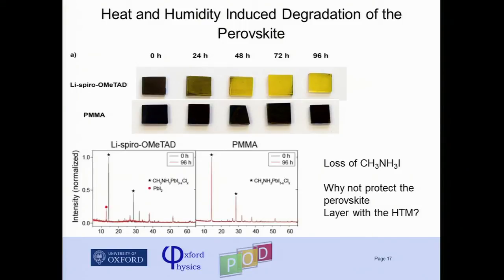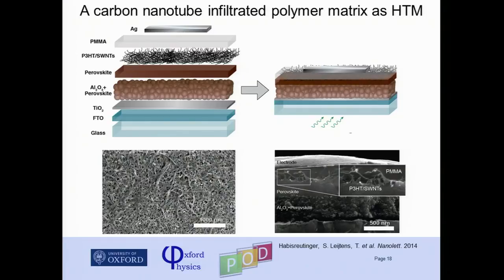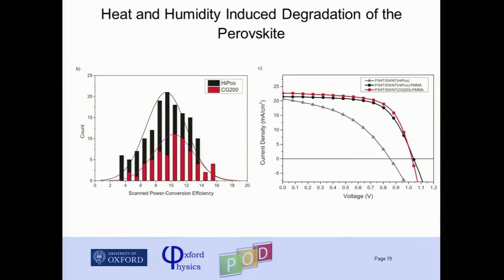The thought then is: if we could get a hole transport layer with this protective property but that isn't insulating like PMMA, we'd be moving in the right direction. So we decided to use quite a strange architecture — I was convinced it wouldn't work. We spin coat a layer of carbon nanotubes wrapped with P3HT on top of the perovskite, making those carbon nanotubes hole-selective so they work as a P-type hole collection layer. Then we spin coat PMMA on top of that. It turns out the carbon nanotubes stick out through the PMMA layer and can reach the gold electrode. The solar cells work surprisingly well — up to 15% power conversion efficiency using this carbon nanotube layer followed by a protective insulating polymer matrix.